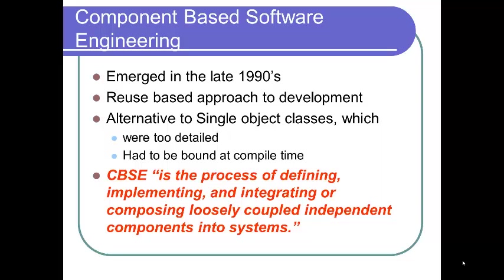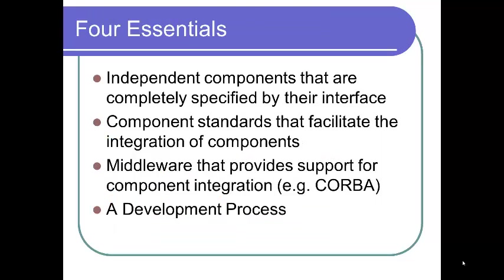There are four essentials of this process. One: independent components that are completely specified by their interface. Two: component standards that facilitate the integration of components. Three: middleware that provides support for component integration — for example, CORBA, which stands for Common Object Request Broker Architecture, a standard to facilitate communication of systems deployed on diverse platforms. And four: a development process. This is the minimum an organization needs to engage in component-based software engineering.